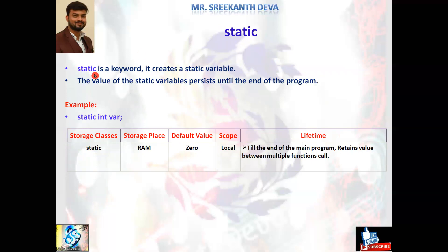static is a keyword used in storage classes. It creates a static variable whose value persists until the end of the program. It is stored in RAM. The default value is zero, unlike auto whose default is garbage. The scope is local, but any changes made within a block or function are reflected in the next function call. Unlike automatic variables which are recreated each time, static variables maintain the state of their previous value between multiple function calls.